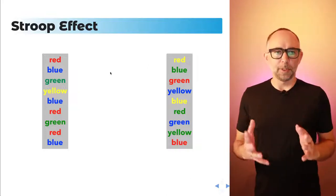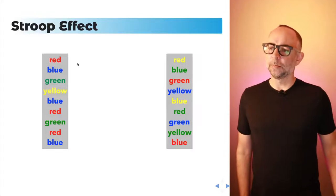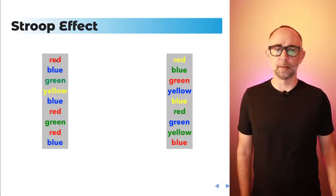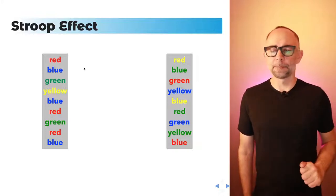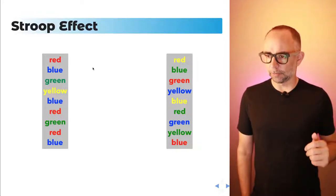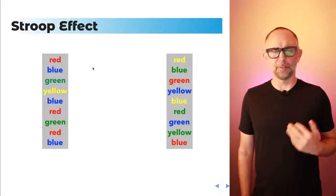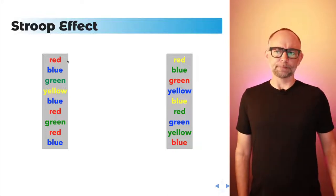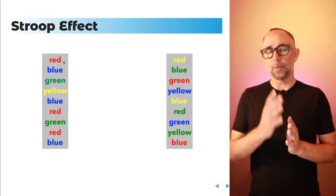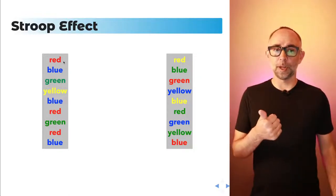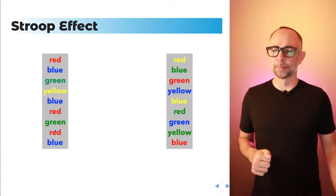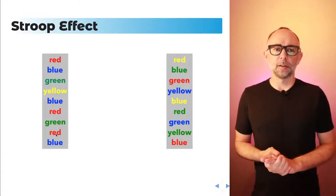If you want to experience the Stroop Effect for yourself, pause the video and try reading the color names from this list as fast as you can. I'll do it right now: red, blue, green, yellow, blue, red, green, red, blue. Not so bad — felt pretty easy. Notice there is a match between the word and the color — the word red in the color red, the word blue in the color blue. These conditions are pretty easy. The task is to say the color, and when the word and color are the same, there's a facilitation effect making it very easy.